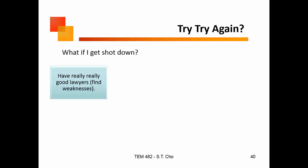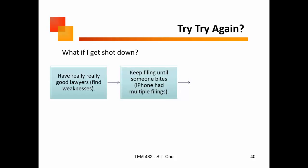What happens if your patent gets rejected? First, find really good lawyers — they can find weaknesses. You can just keep filing until something sticks. The iPhone is rumored to have had at least four filings — they just kept filing the same thing until they found a patent examiner willing to sign off on it. 'Curved edges' — give me a break. The easiest way to break a patent is to find it in the prior art. I've had people show me their patents and I said I could break it — then I went online and found a picture showing exactly what they were doing already in the prior art.